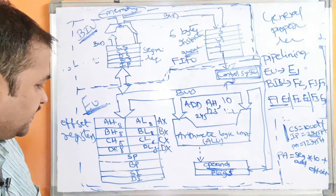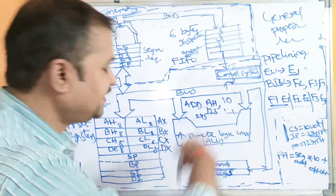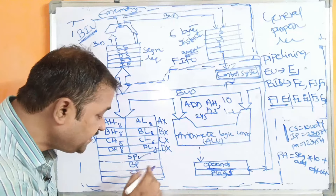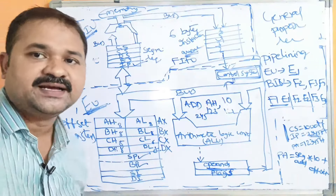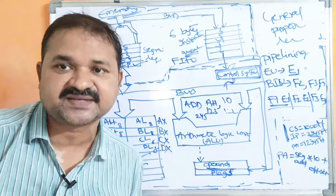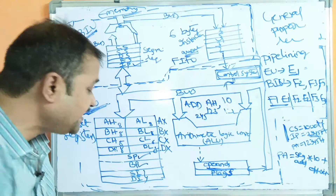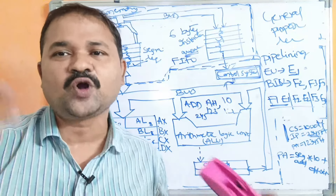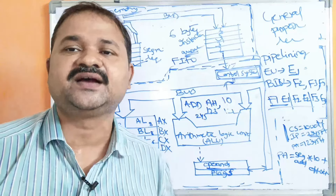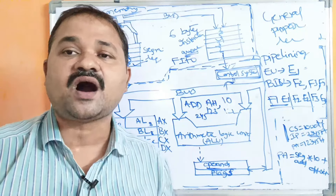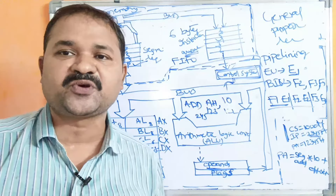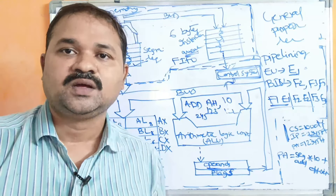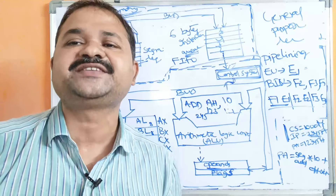Stack Pointer, Base Pointer, and Instruction Pointer are called pointer registers. Source Index and Destination Index are called index registers. We will discuss more about registers in the next concept on register organization. This concludes the architecture of the 8086 microprocessor.